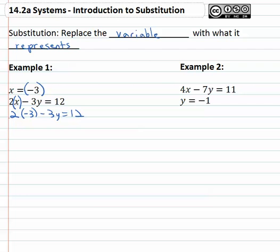This is something we can solve by first simplifying, giving us negative six minus three y equals twelve.